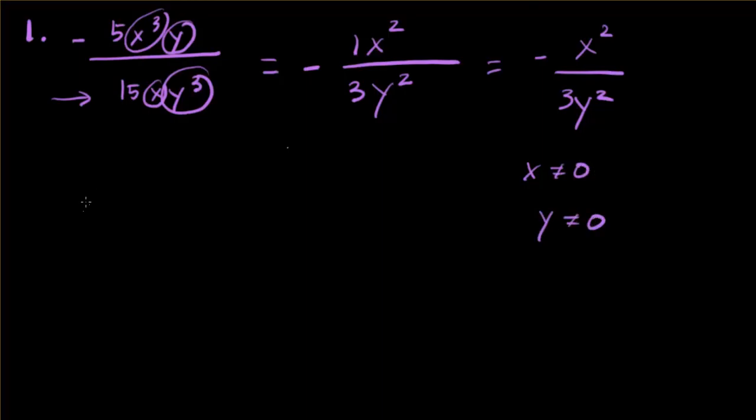Well, let's look what happens if x is zero. If we take that denominator and if we make x zero, 15 times zero times y to the third, that whole entire denominator is going to become zero.